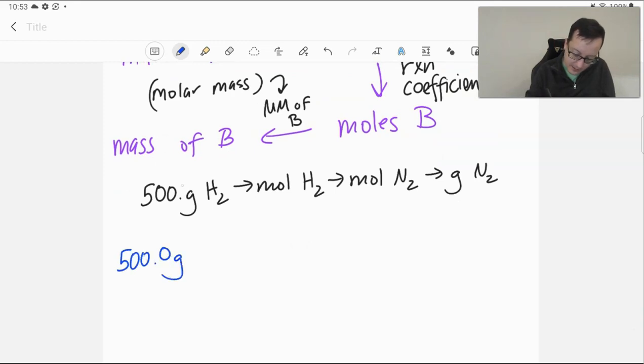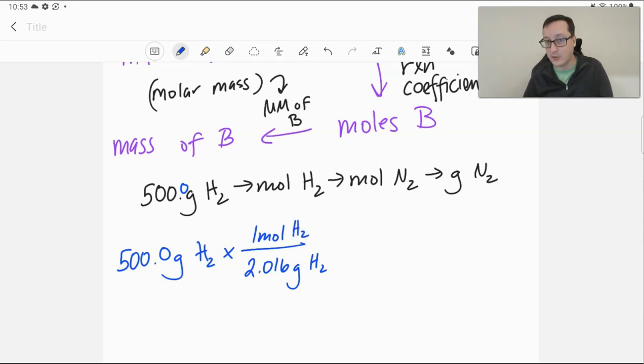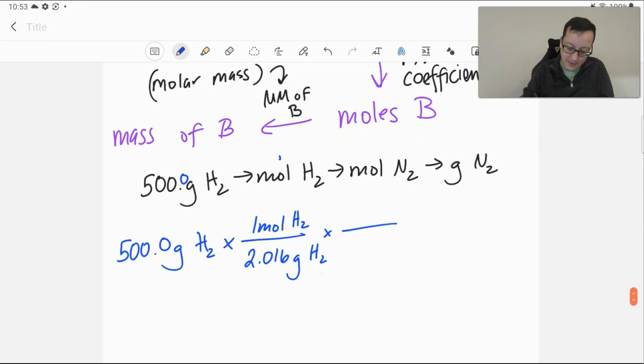500 grams hydrogen. This is just unit conversion. Our molar mass of hydrogen is 2.016 grams per mole. It's also a good idea to include your substance as you're going through this, so you don't get confused. Next, we're now here. We need to now go to moles of nitrogen. So, we saw from our reaction that we had three moles of hydrogen for one mole of nitrogen.